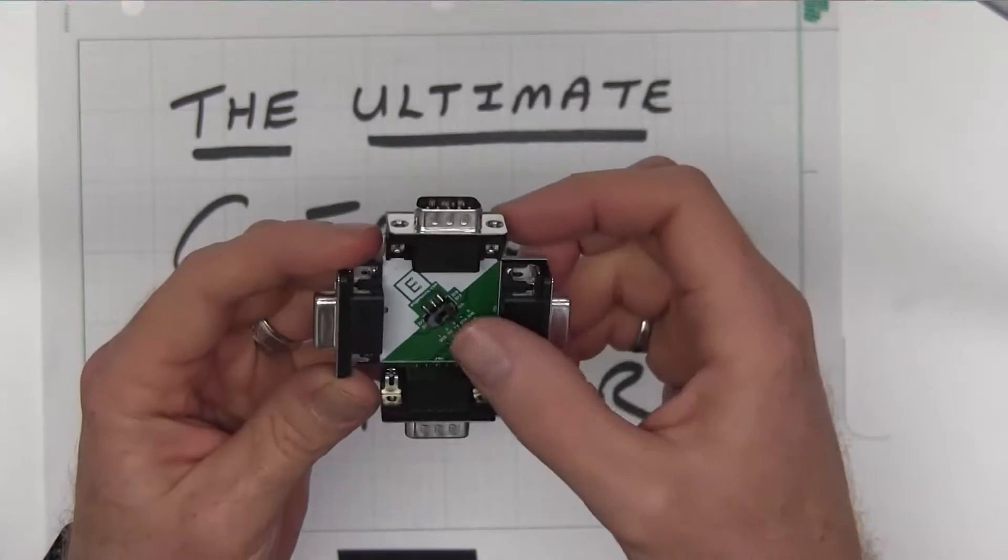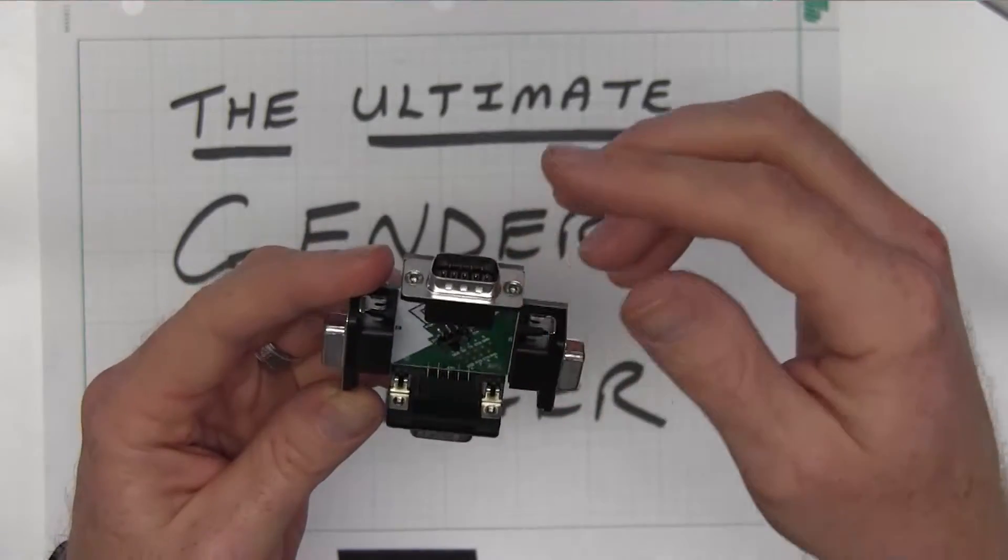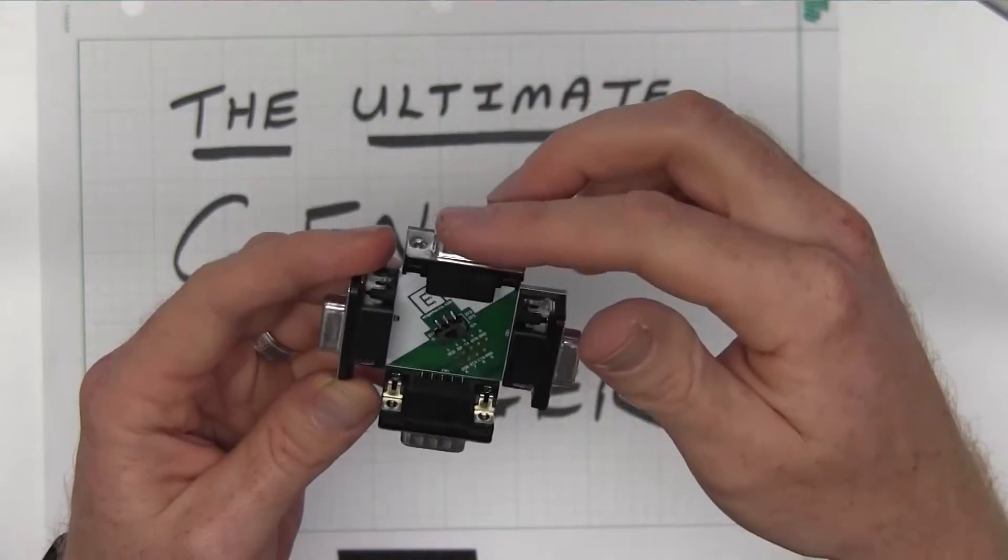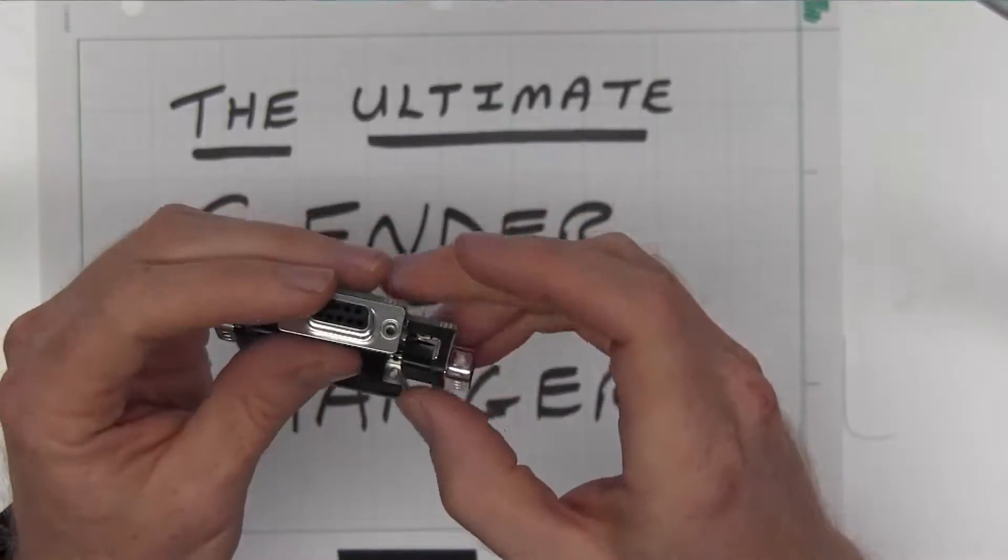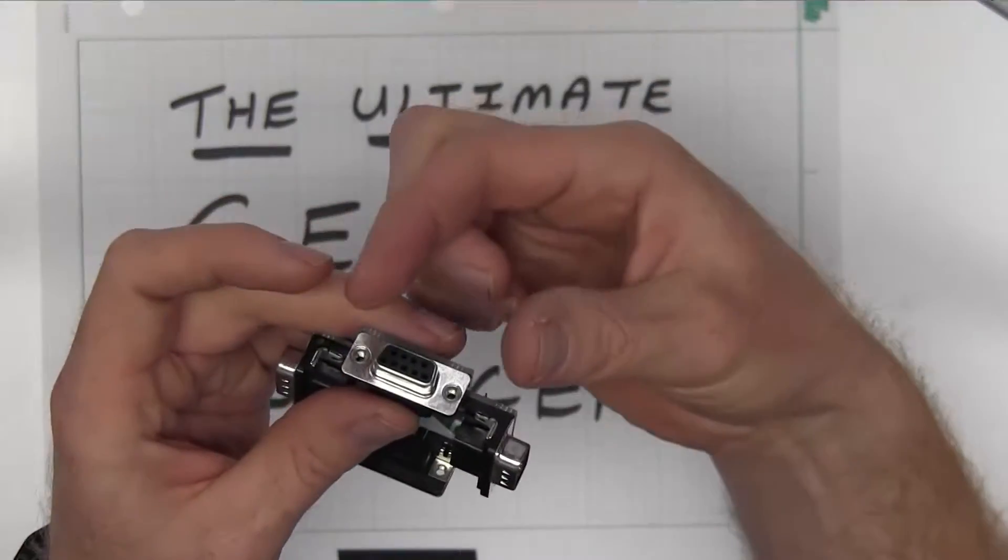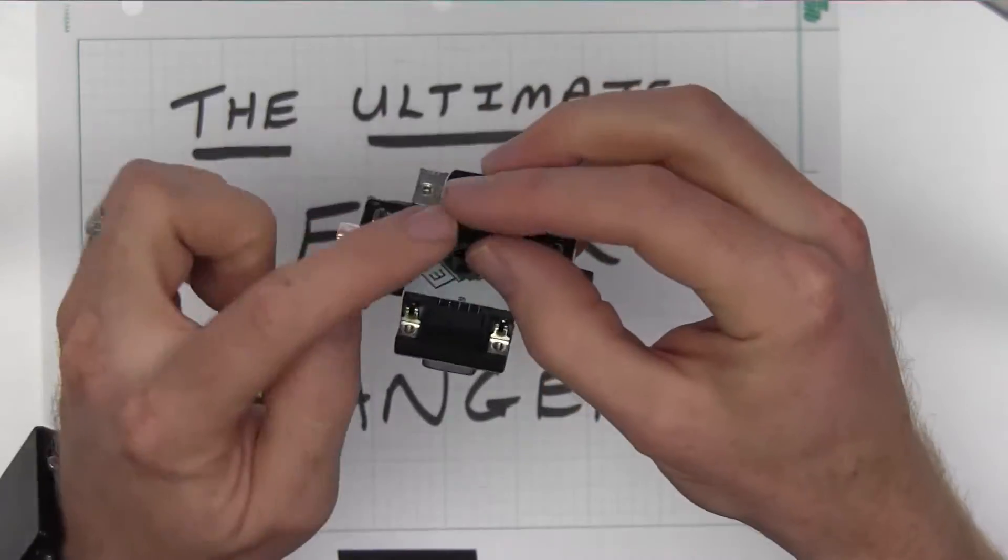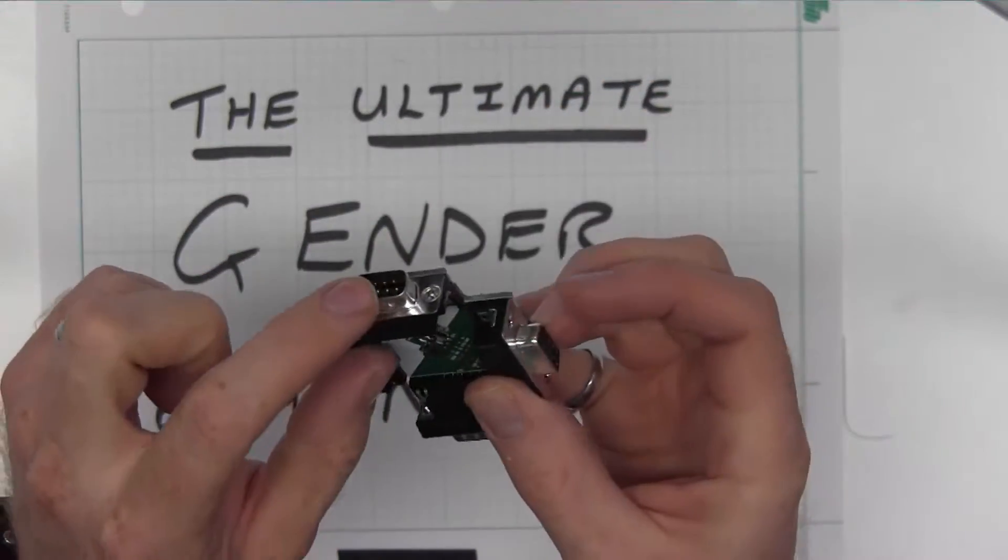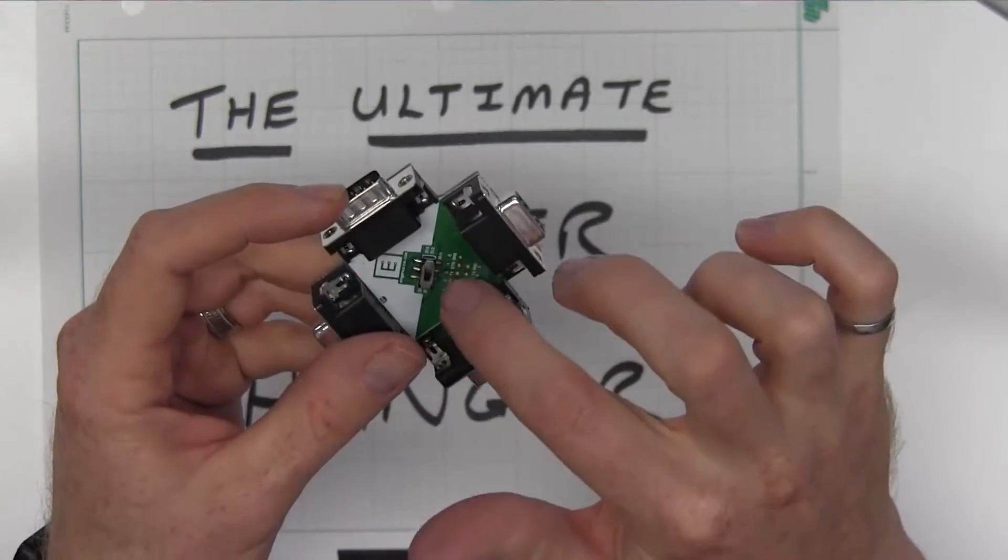Then you have the option of changing it to null modem. Same sort of thing, you could gender change and switch to null modem by going across, or if you wanted to just switch to null modem, if you have a male cable that's a straight through cable, you could plug in here and come across here. So you go through the switch and you come out male there. If you want to use the switch, remember you go from this region to this region.